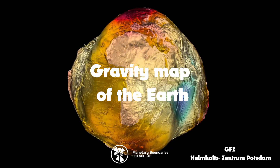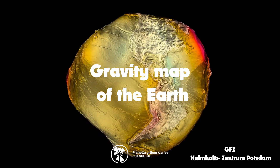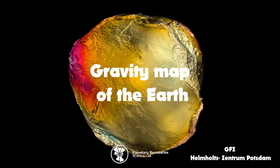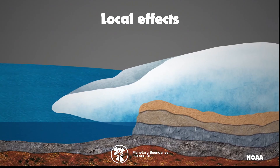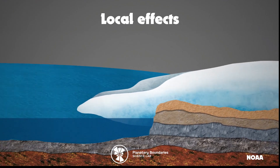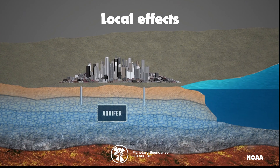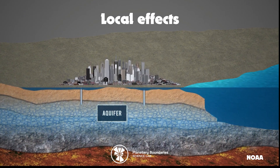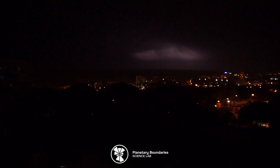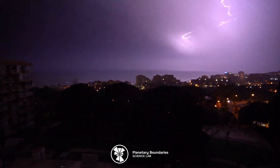Land movement changes and gravity also play a local role. For example, land ice loss makes land rise, and water or fossil fuel extraction makes land sink. Globally, climate change is the primary driver of sea level rise.